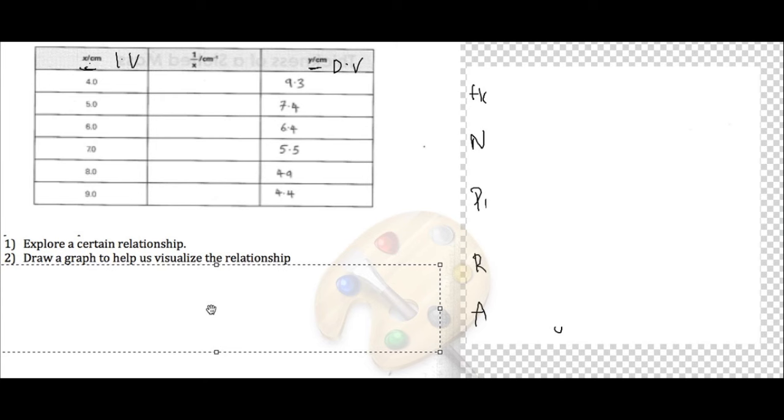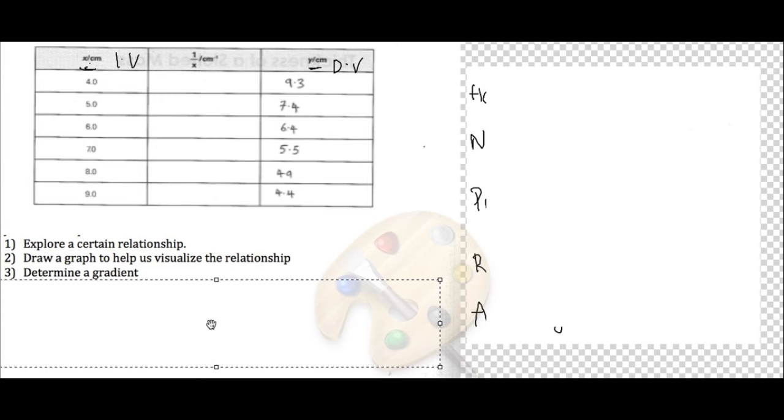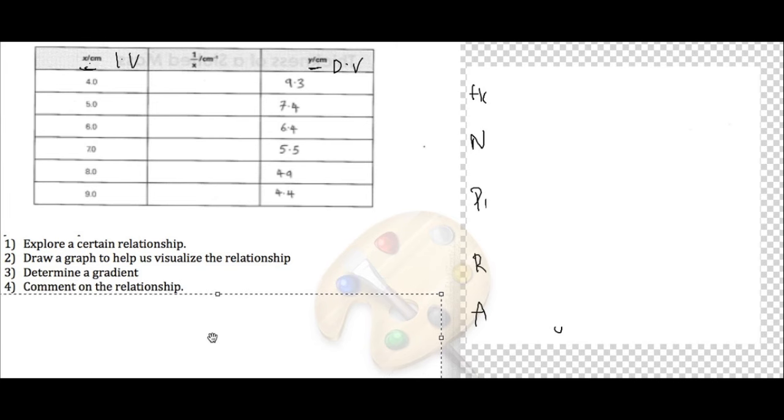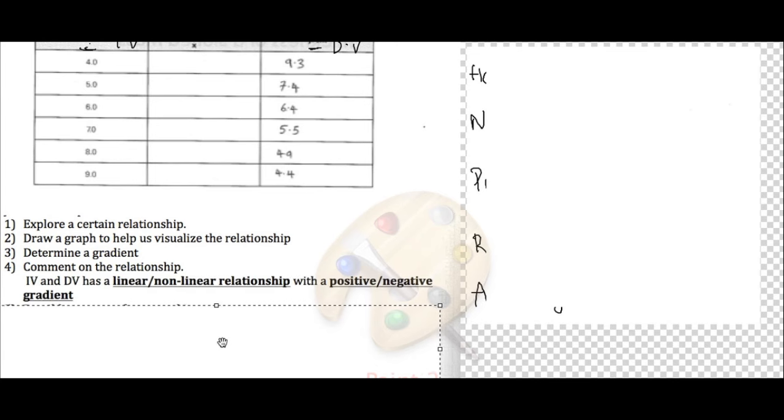After you've drawn a graph, usually then you will need to determine a gradient. After determining the gradient, you will need to comment on the relationship between the two because that's the whole purpose of the experiment, right? So there is a standard kind of answer for this. IV and DV, or the independent variable and the dependent variable, has a linear or non-linear relationship.